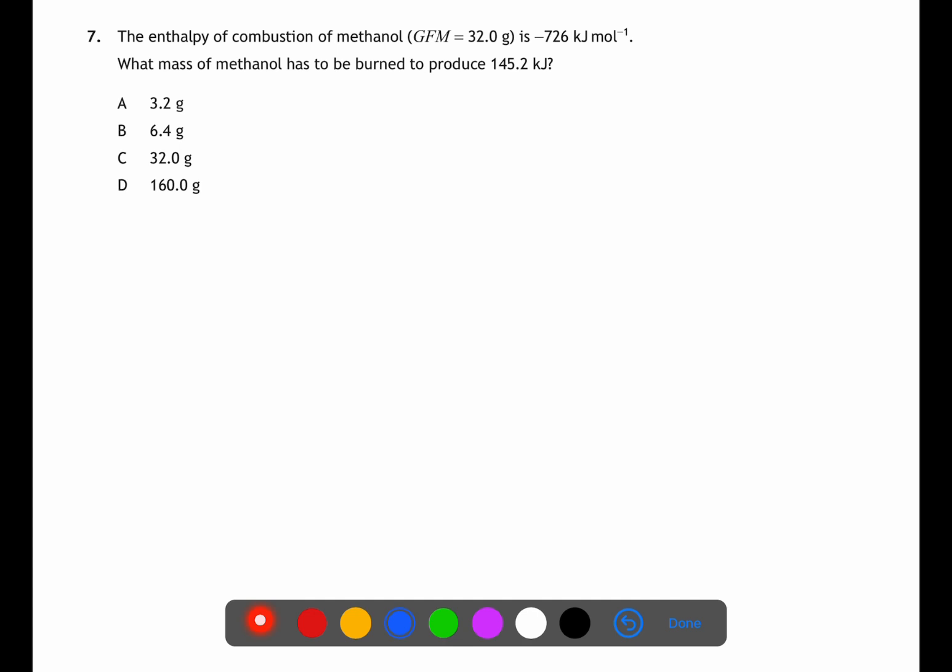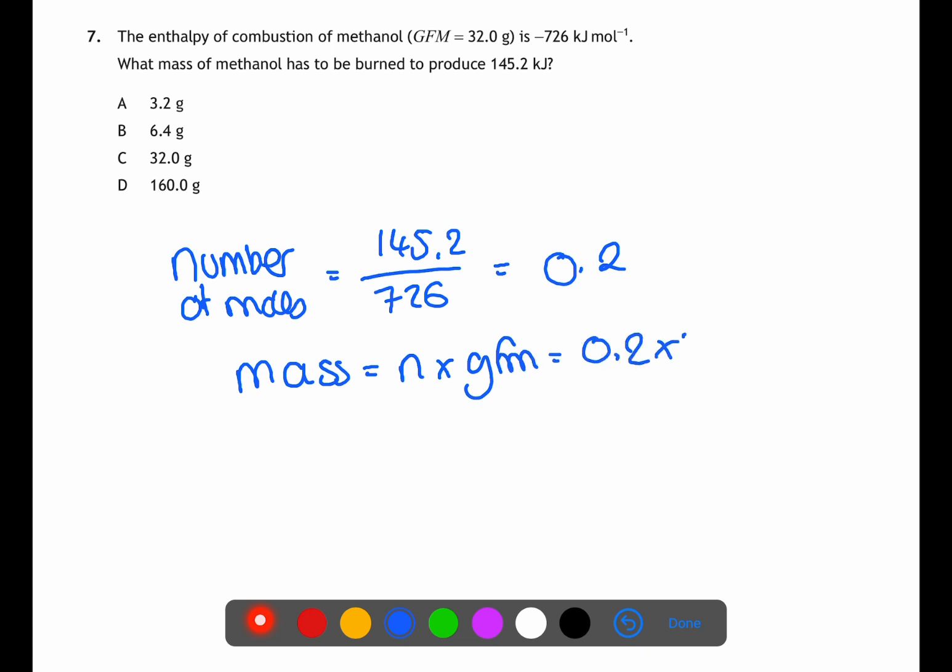This means that we need to calculate the number of moles of methanol to be able to calculate the mass of methanol. To do this we will do 145.2 kilojoules divided by 726 kilojoules per mole. This will give the number of moles that was burned as 0.2. We can then use this number and multiply by the gram formula mass to find the mass of methanol which was used. This comes out to be 6.4 grams.